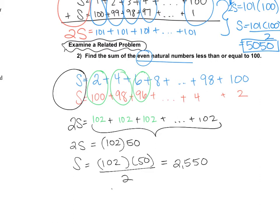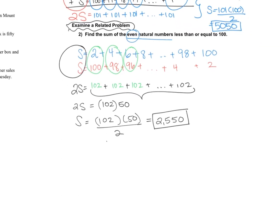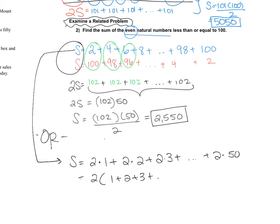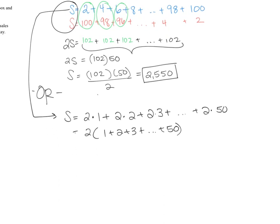So again, once we kind of notice Gauss's strategy, we are able to use a similar problem and relate it to that previous one. There's another way that we could have done it similarly. Notice that this sum could have been written as 2 times 1 plus 2 times 2 plus 2 times 3 all the way to 2 times 50. Really taking out that 2, which is why those numbers were even. So this is 2 times, and we see 1 plus 2 plus 3 all the way to 50.